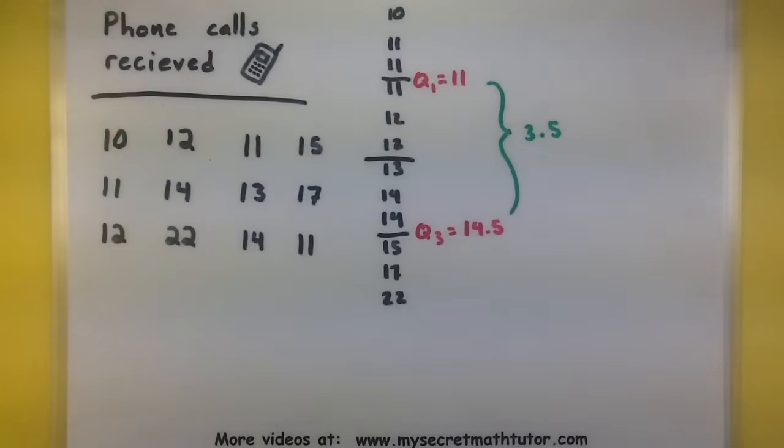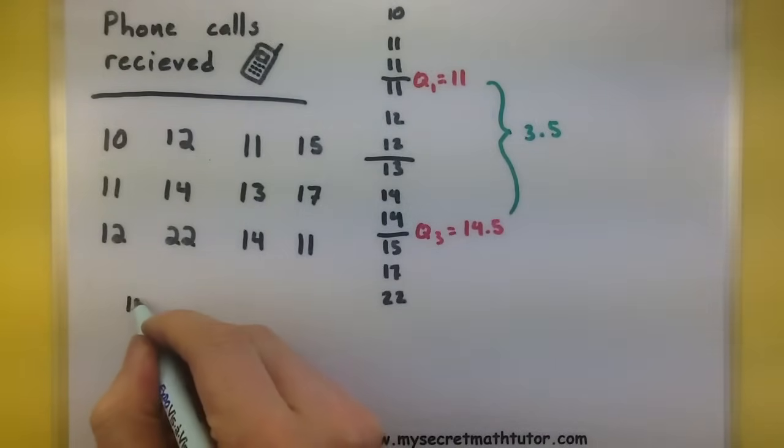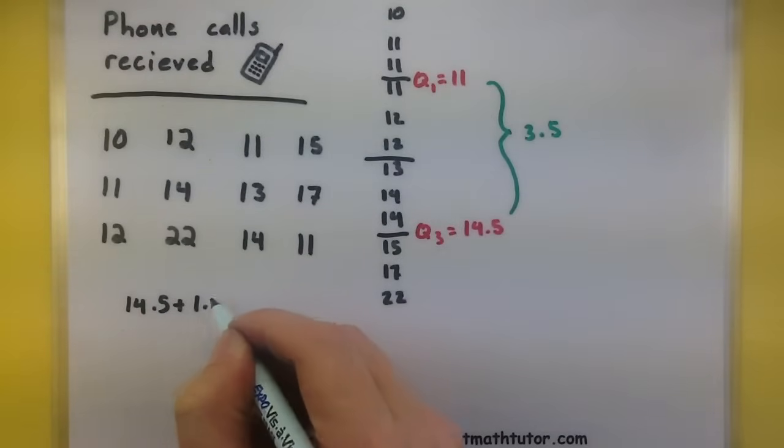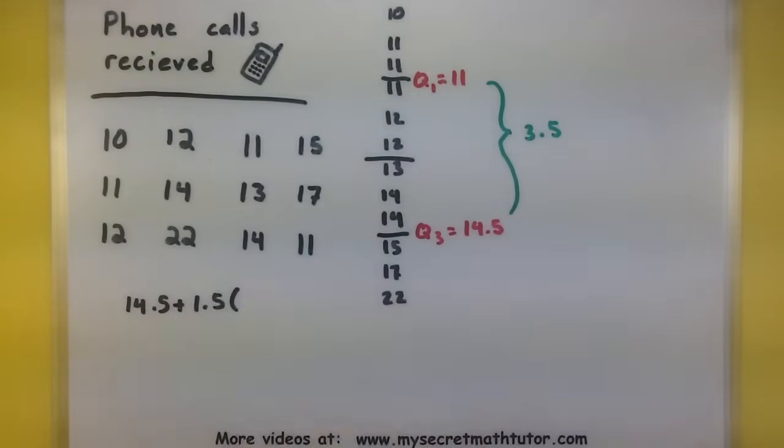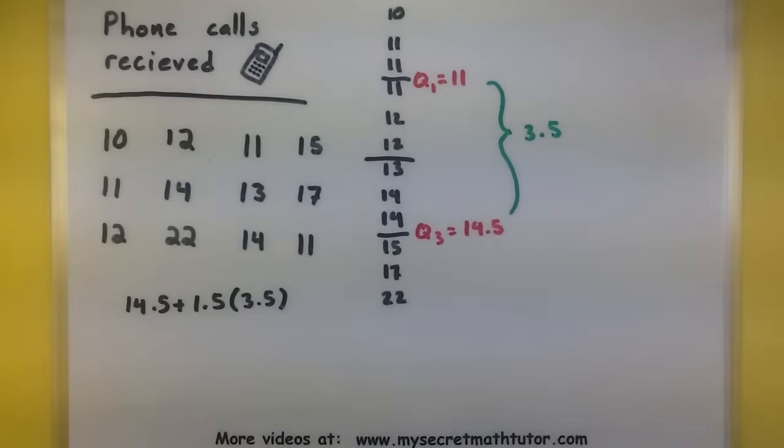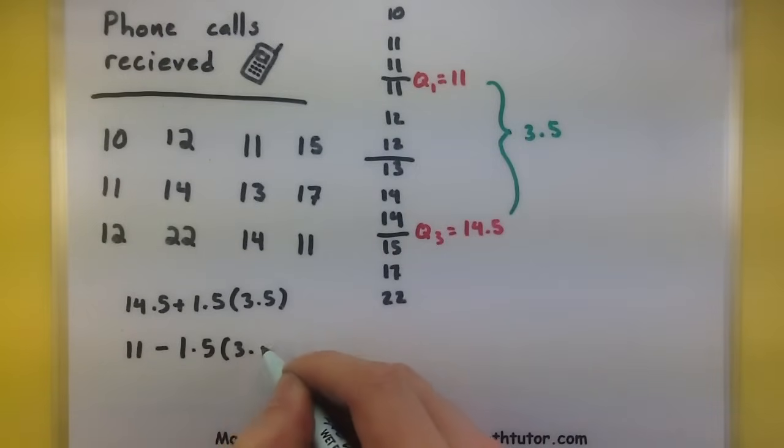So to look for an extremely high value, it must be larger than Q3, which is 14.5, plus 1.5 times the interquartile range, 3.5. And to find an extremely low value, I would take Q1, 11, and I would minus 1.5 times the interquartile range.